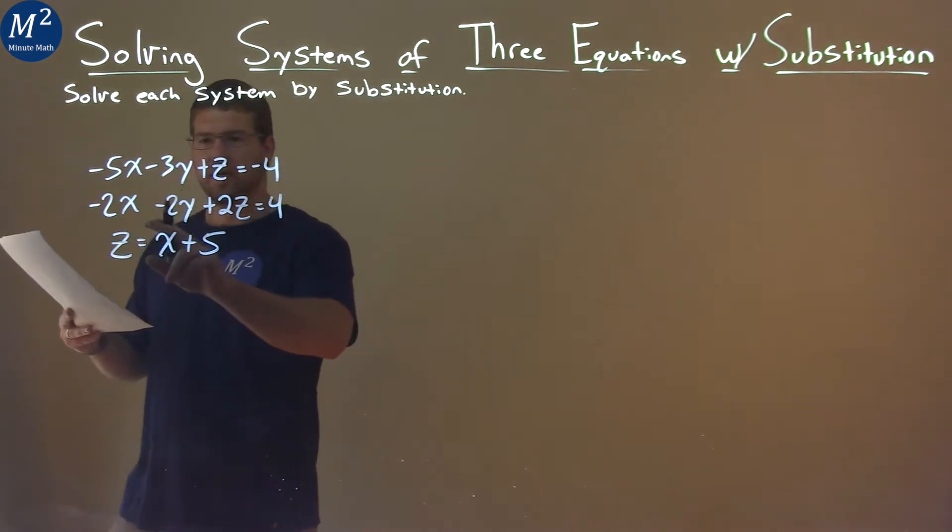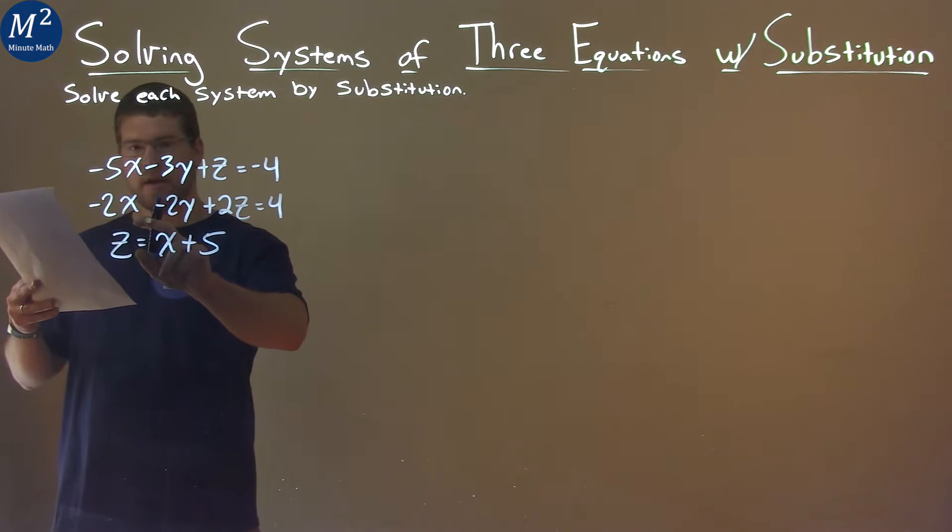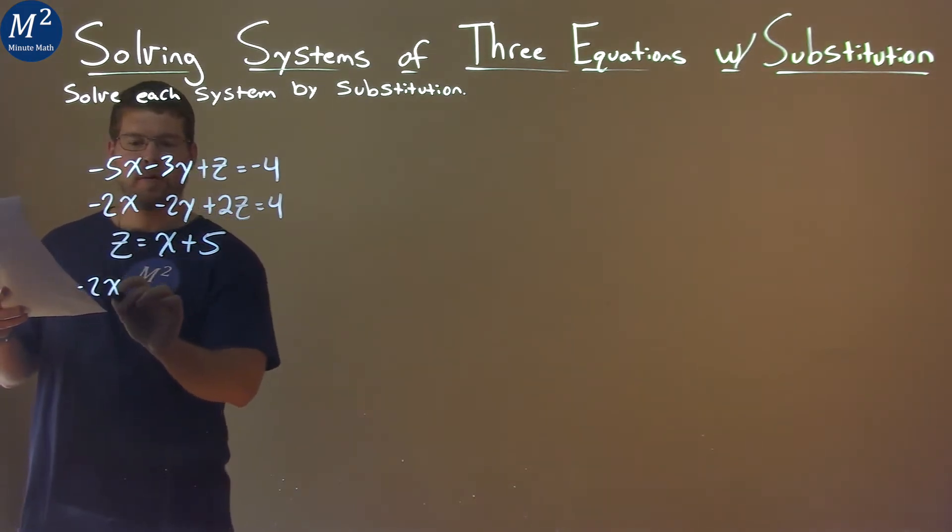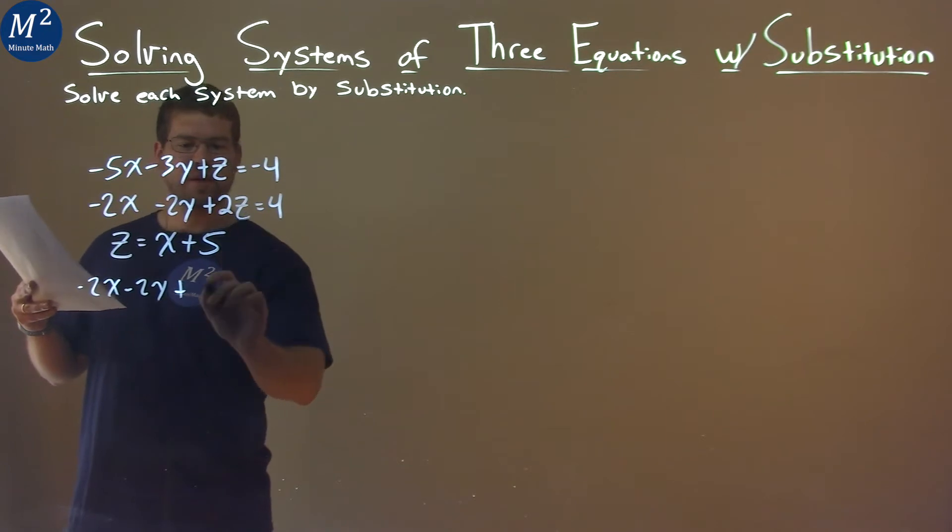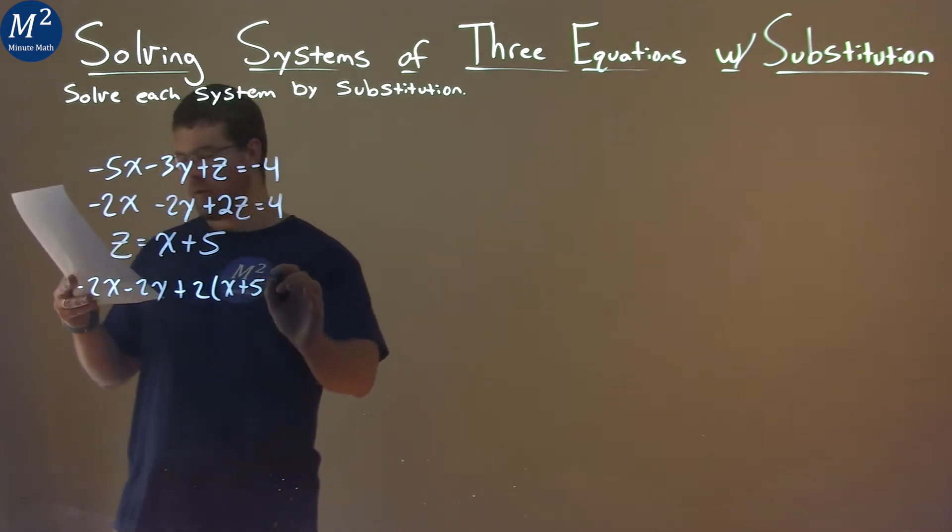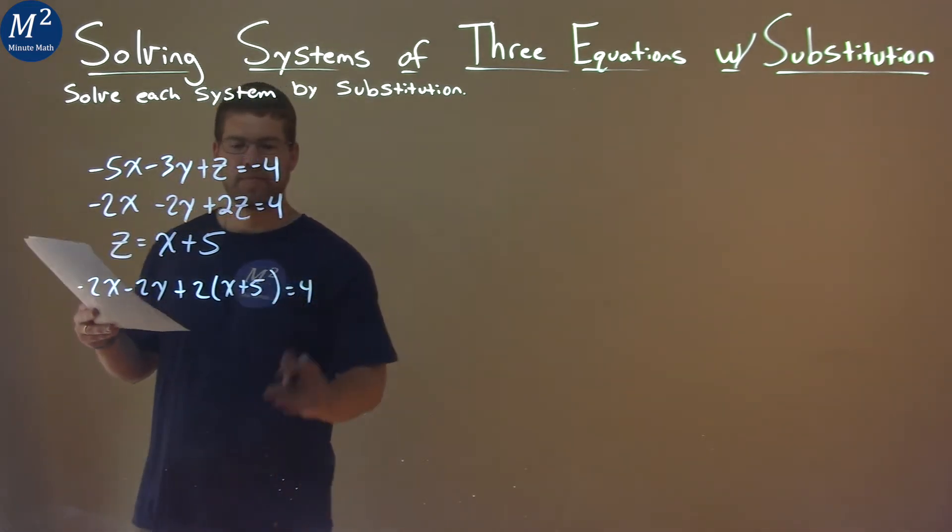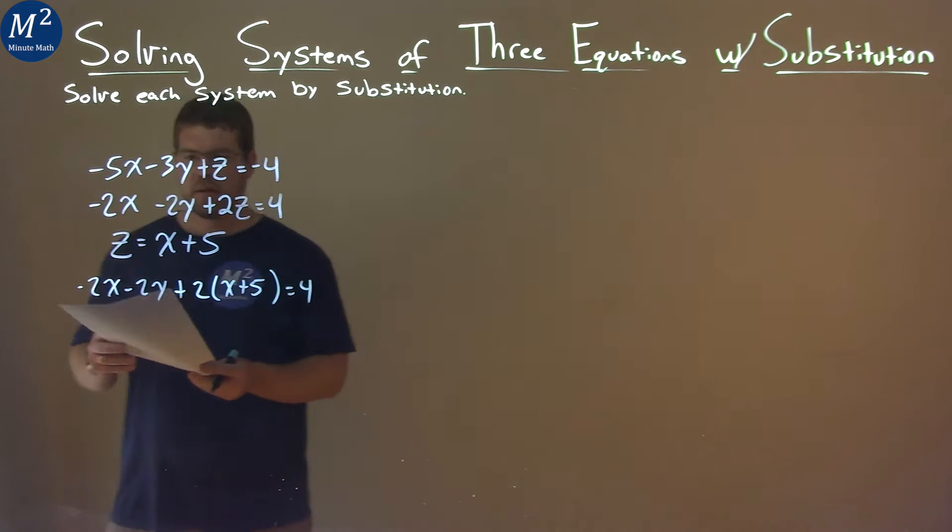Let's look at our second equation here. Negative 2x minus 2y, and instead of z, I have this as x, or z in terms of x. So, let's put that x plus 5 in for that z value, and that's equal to 4. We're substituting that in.